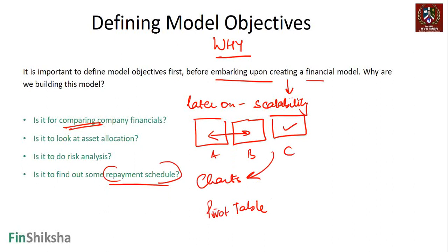So if I am building it for a company financial comparison objective across the sector, then keeping in mind the scalability, I might take a different approach than if I was taking a repayment schedule scenario. It is important to define some of these model objectives. Once we define the model objectives, we can then search for what should be the inputs and then what should be the output of the model. Typically that's the way it works, and it's easier to look at this using certain examples.